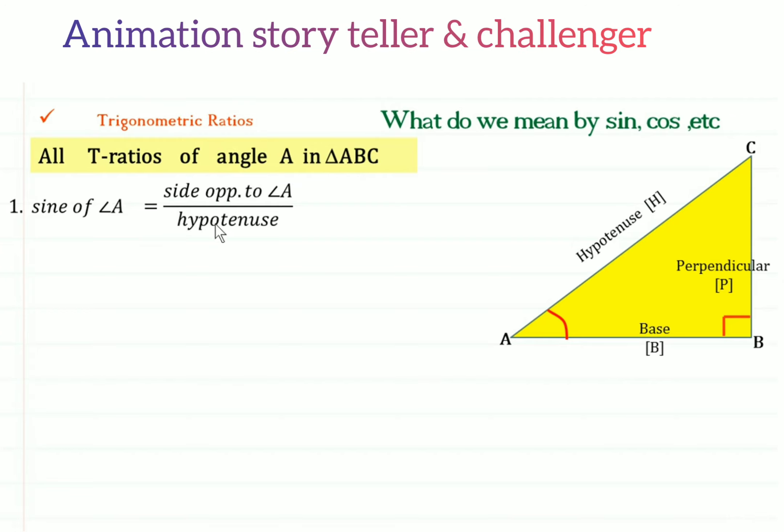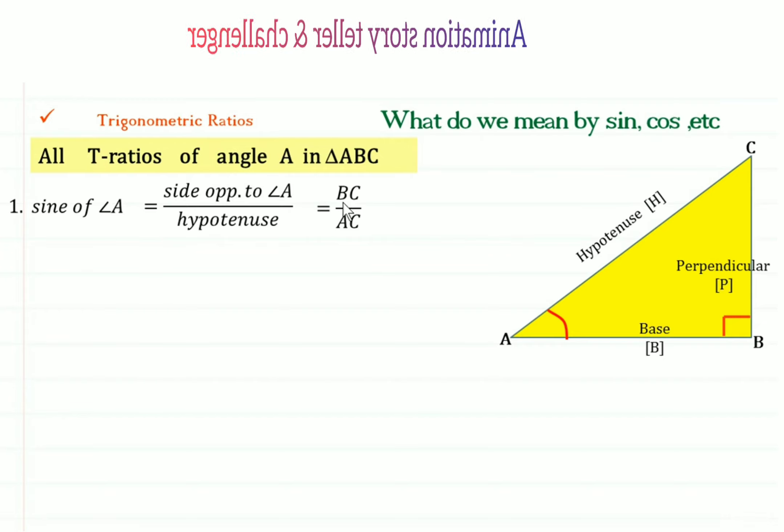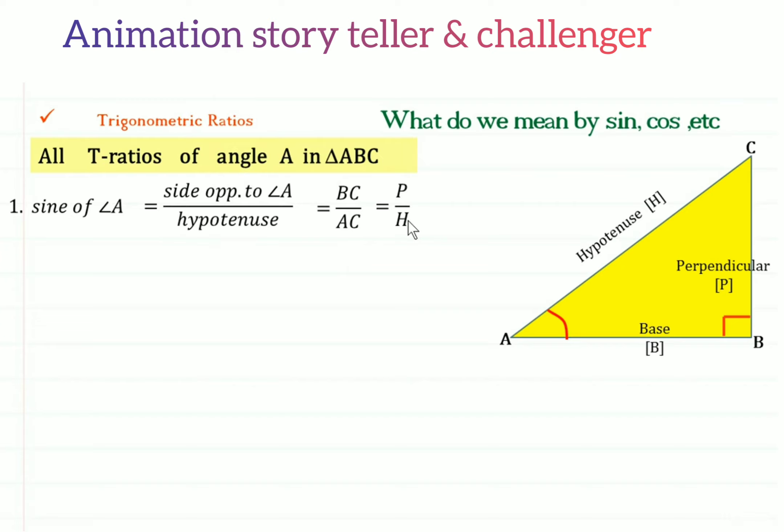It is defined as the ratio of side opposite to angle A to hypotenuse. So side opposite to angle A is BC and hypotenuse AC. So sine of angle A is equal to BC upon AC, which can be written as P upon H, perpendicular upon hypotenuse. And in short it is written as sin A. When I say sin A, I mean sine of angle A.